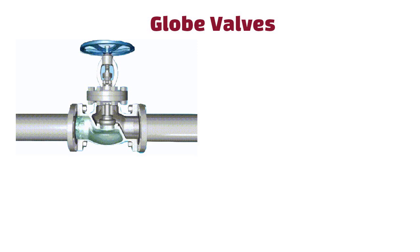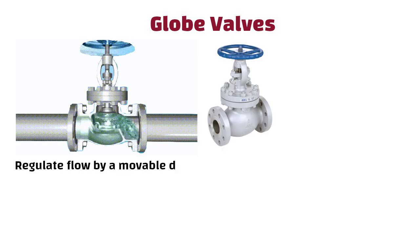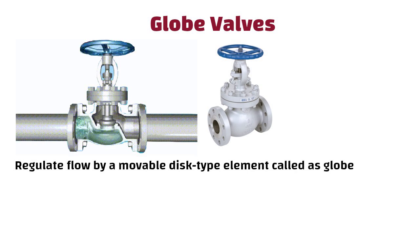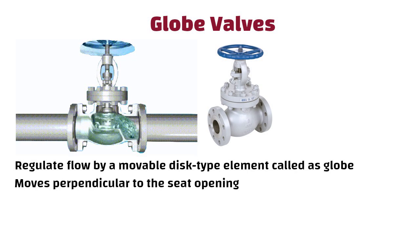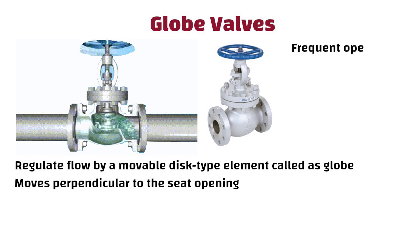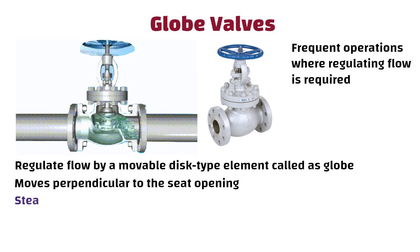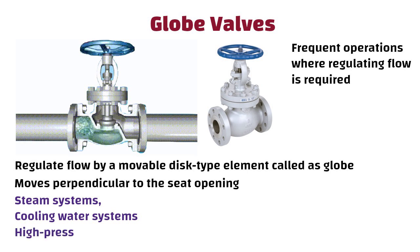Globe valves regulate flow by a movable disc-type element called a globe that moves perpendicular to the seat opening. These types of valves are often used for frequent operations where regulating flow is required, such as in steam systems, cooling water systems and high pressure applications.